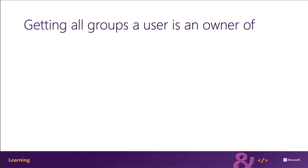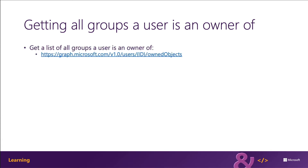Microsoft Graph can be used to obtain a list of all groups that a user is an owner of. This is done by requesting all directory objects the user owns. A directory object is the base type for many other entity types, including Office 365 groups and security groups. You're going to use the owned objects property of a user resource to get a list of all the directory objects that the user is an owner of.